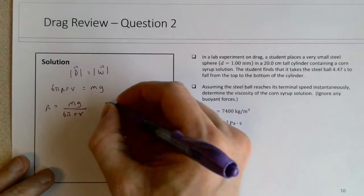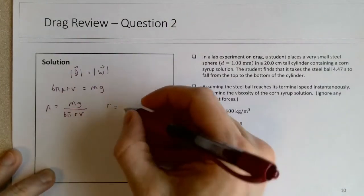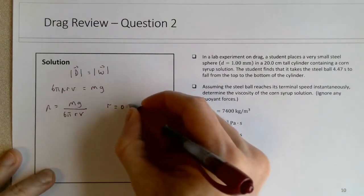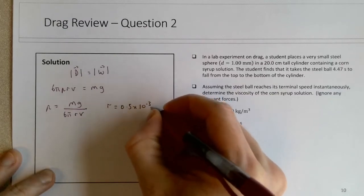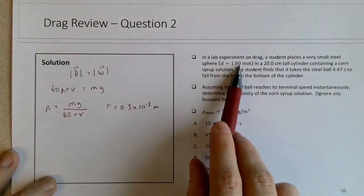So if we think about, I'll just do this on the side here, r will be equal to 0.5 millimeters, so that's 0.5 × 10⁻³ meters, so half a millimeter, because the diameter is a millimeter.